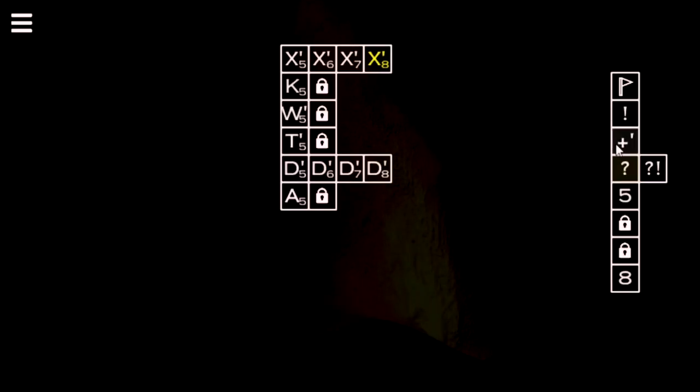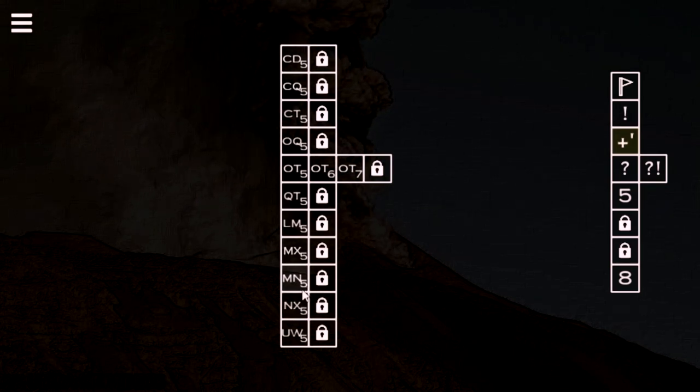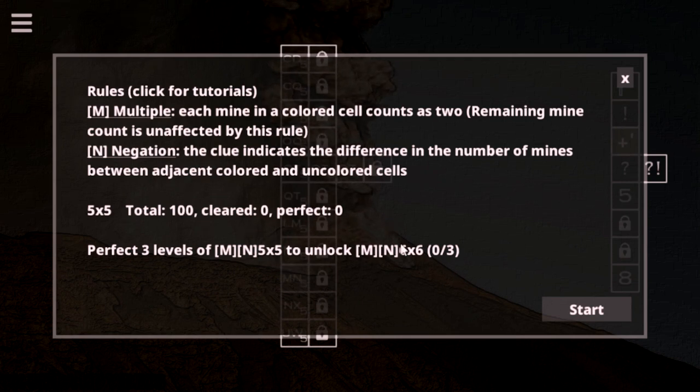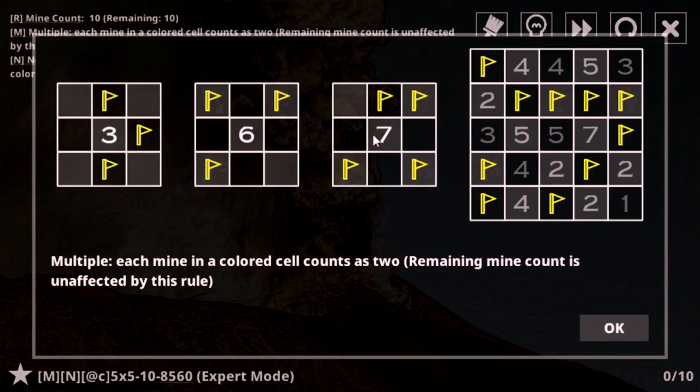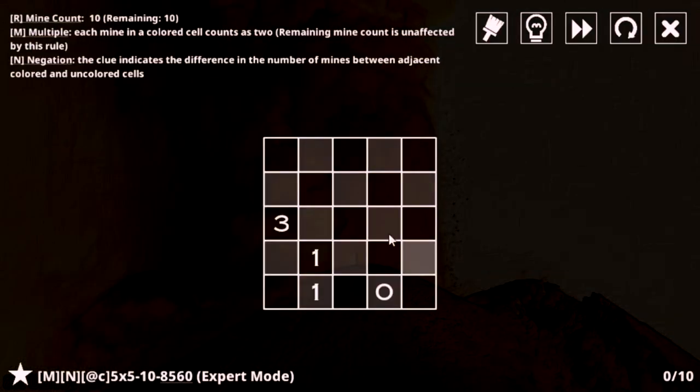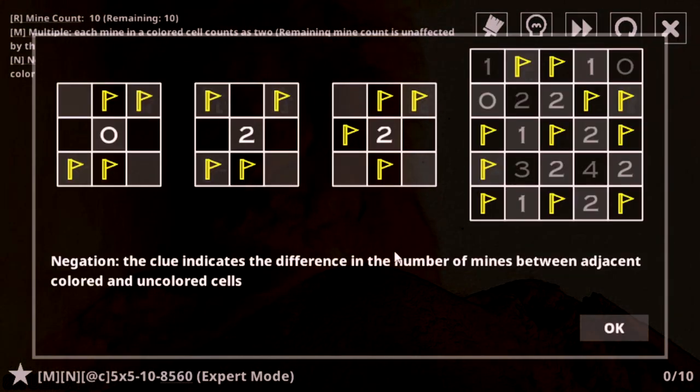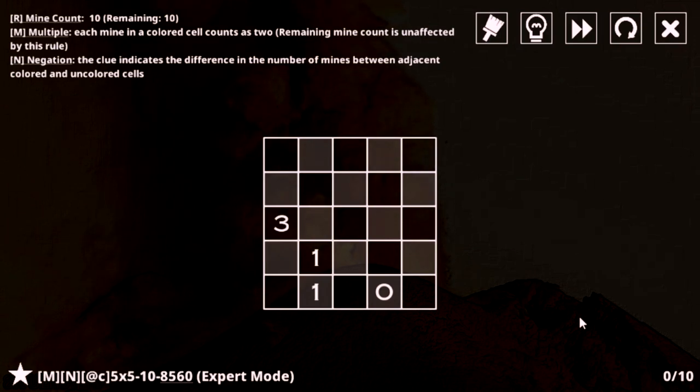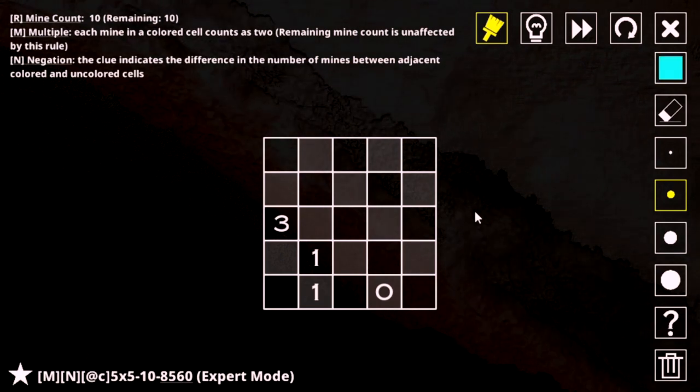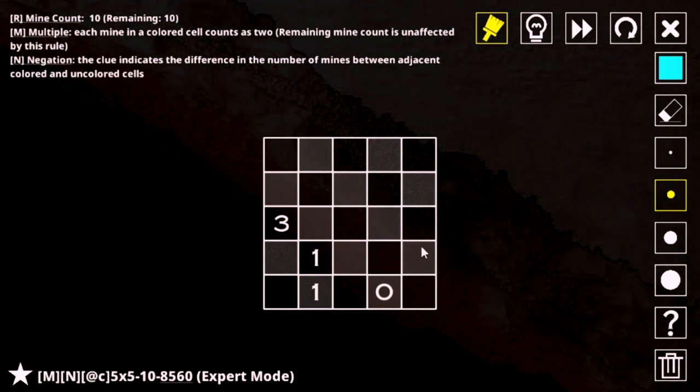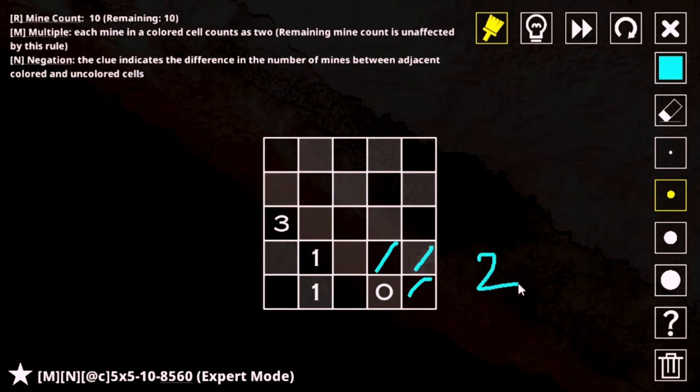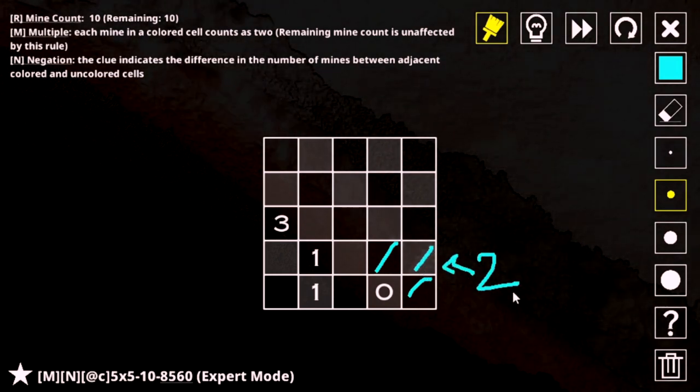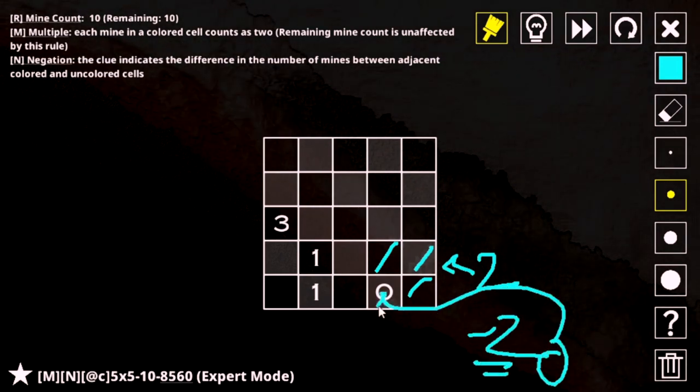Now, in the same update, there were two other combination levels. I have another video on the special combination levels, but these were added, so I don't have any progress on them. Let's check it out. Again, with the ultimate mode rules. Multiple and negation. So each mine in a colored cell counts as two, so gray cells count as two for the numbers, and negation, where the clue indicates the difference in the number of mines between adjacent colored and uncolored cells. But in this case, it's very weird the way this interacts. I think the way it's going to work is that because gray cells will count as two, this will count as zero, because that's two in the grays. A single counts as two, and these also count as negative two. So that's why the number would be zero for this.